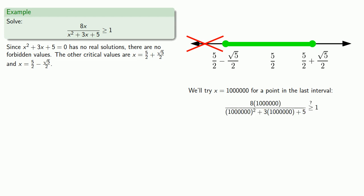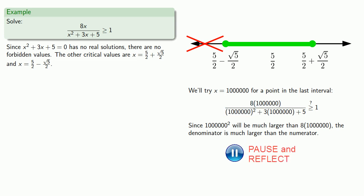Since 1 million squared will be much larger than 8 times 1 million, the denominator is much larger than the numerator. And this inequality is false, and we'll exclude this way right.